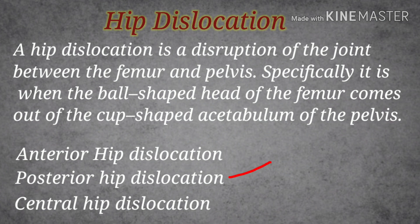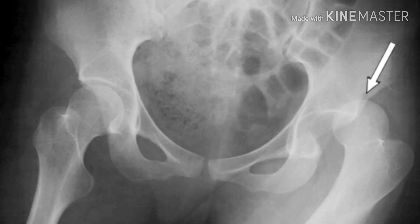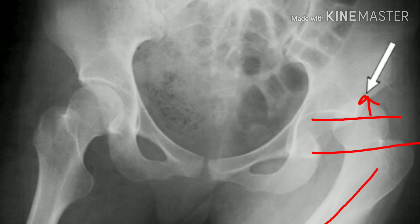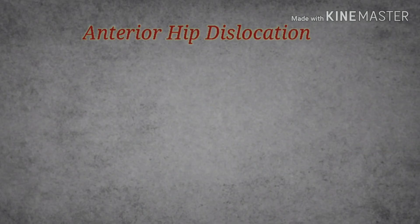The most common type is the posterior hip dislocation. In this particular X-ray, we can see that the head of the femur has moved superiorly and posteriorly relative to the acetabulum. The shaft of the femur is also in an adducted position, which is a typical example of posterior hip dislocation.